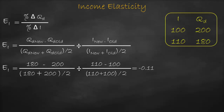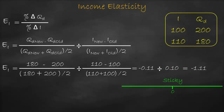This gives us negative 0.11 divided by 0.10, which gives us negative 1.11. Remember, for income elasticity our benchmark is zero. If income elasticity equals zero, it means the product is sticky. If it's bigger than zero, it's a normal good. If it's lower than zero, it's an inferior good. For normal goods, we have another classification with a benchmark of 1: between 0 and 1 is necessity, bigger than 1 is luxurious. Here, income elasticity equals negative 1.11, which is lower than zero, so it is an inferior good.